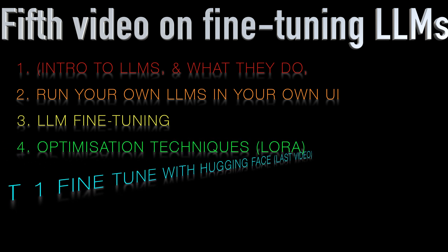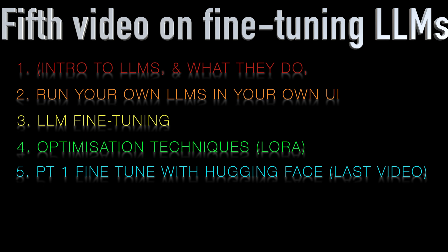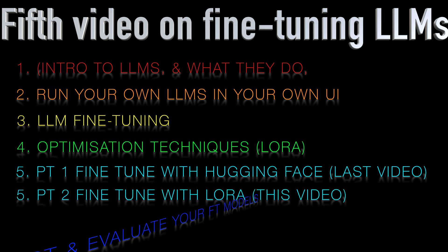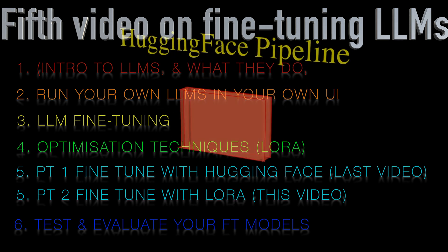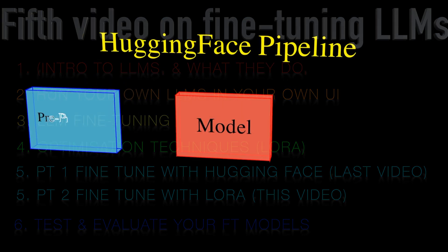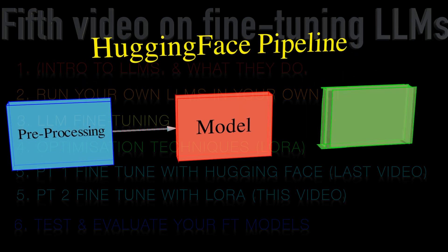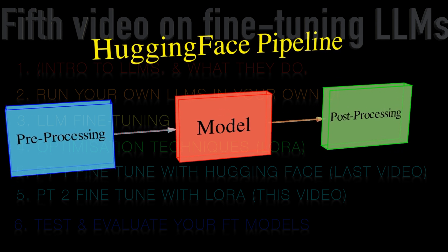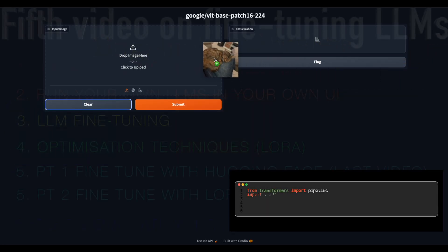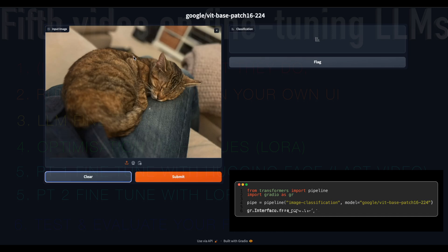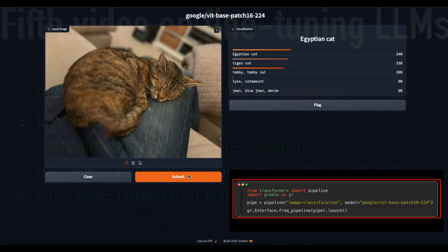In the last video we looked at Hugging Face Pipelines and Trainer APIs. Hugging Face Pipelines are the highest level APIs for working with large language models. They make it super easy to get up and running with LLMs. In just four lines of code you can write really sophisticated AI applications as you can see on your screen.